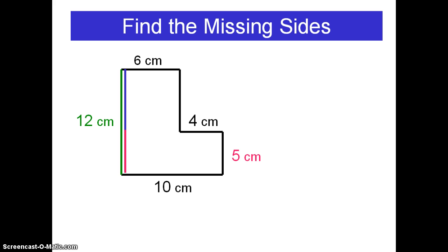The pink segment is already known to be five centimeters in length. In this situation, I will need to subtract my five centimeters from the total of twelve centimeters, which means my blue missing segment should have a length of seven centimeters.